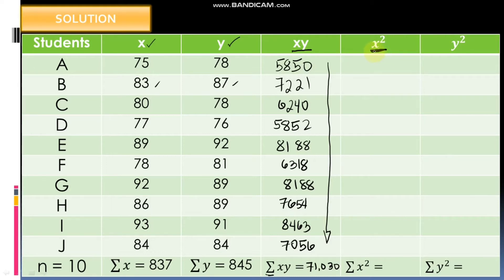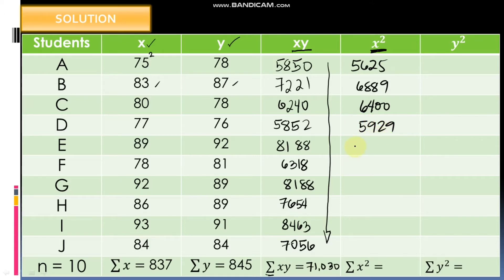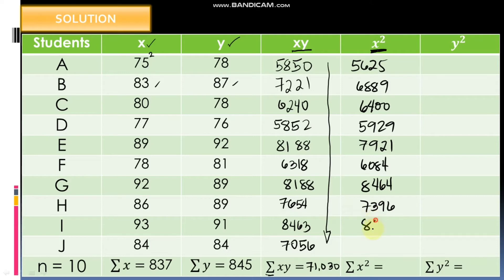For the X² column, you need to multiply each X value by itself. So 75 times 75 equals 5,625. Then 6,889, then 6,400, then 5,929, then 7,921, then 6,084. Then 92 times 92 equals 8,464, and 86 times 86 equals 7,396, then 8,649, then 7,056. The total summation of X² is 70,413.